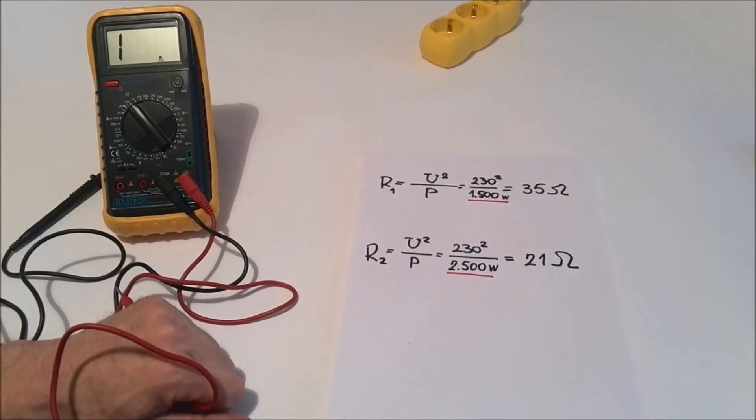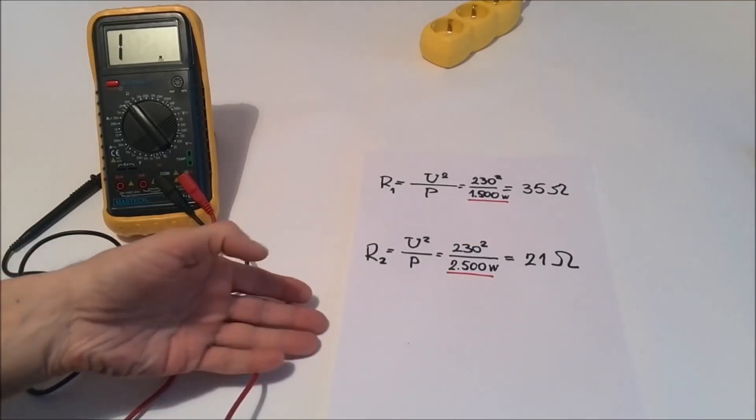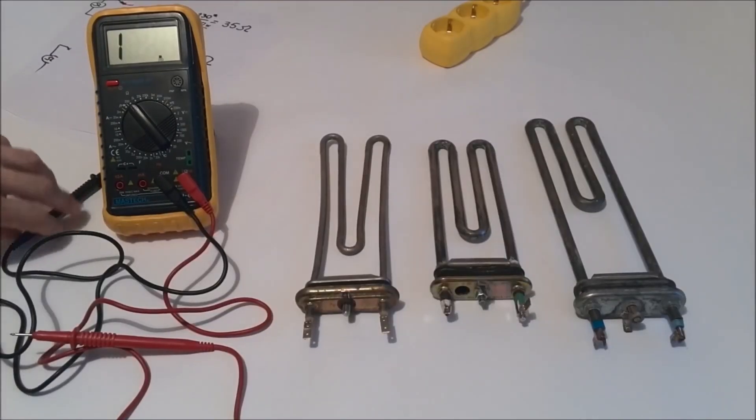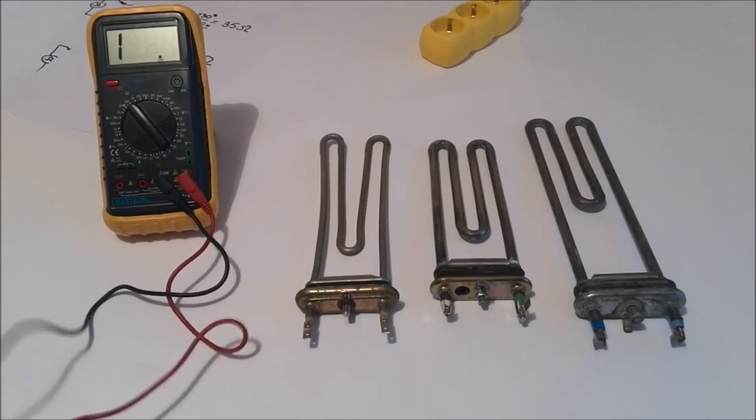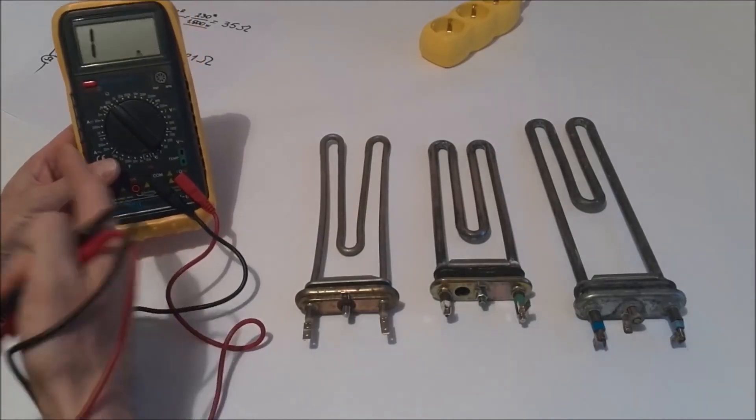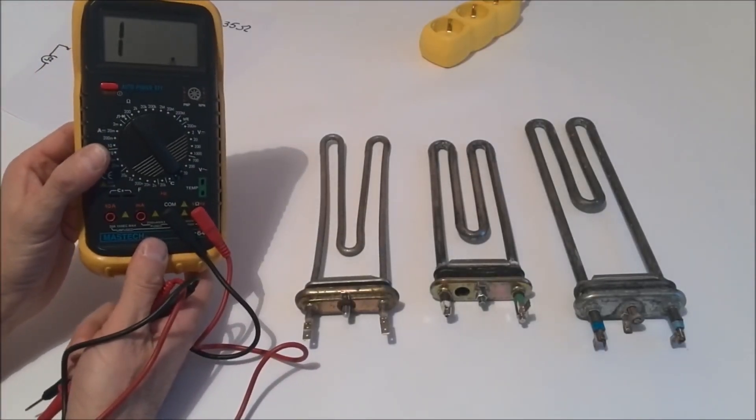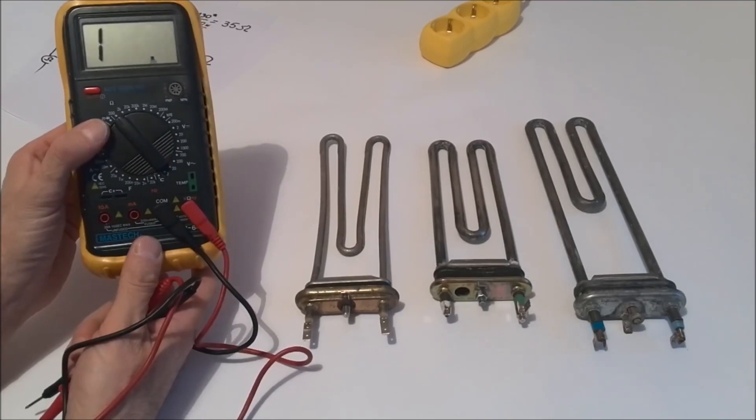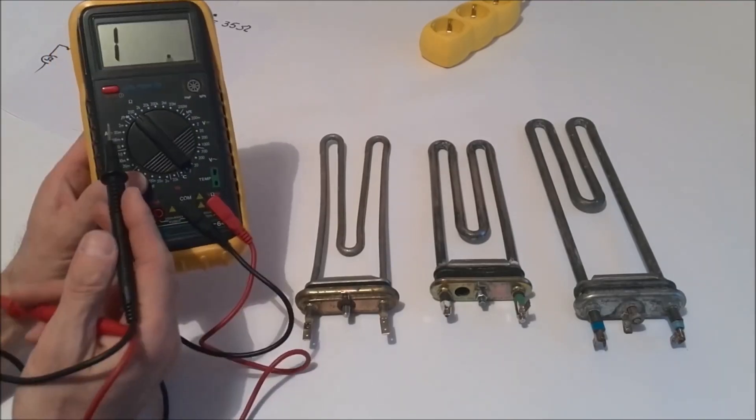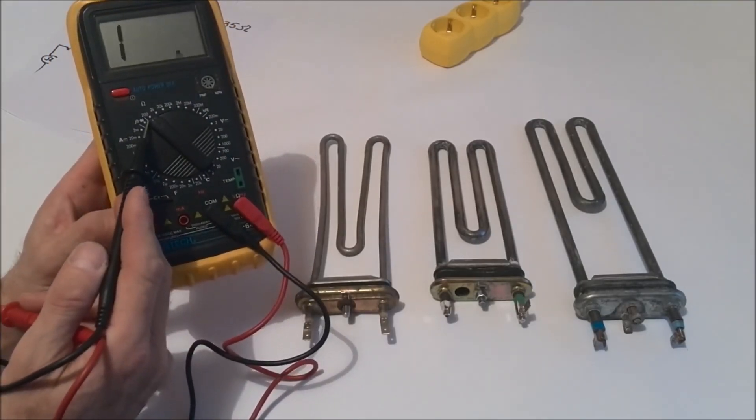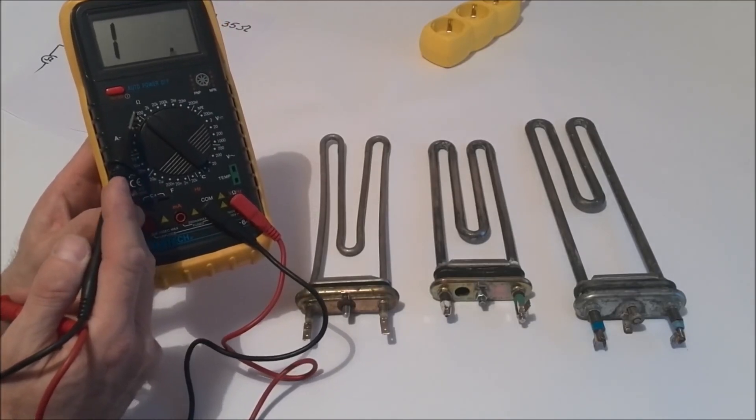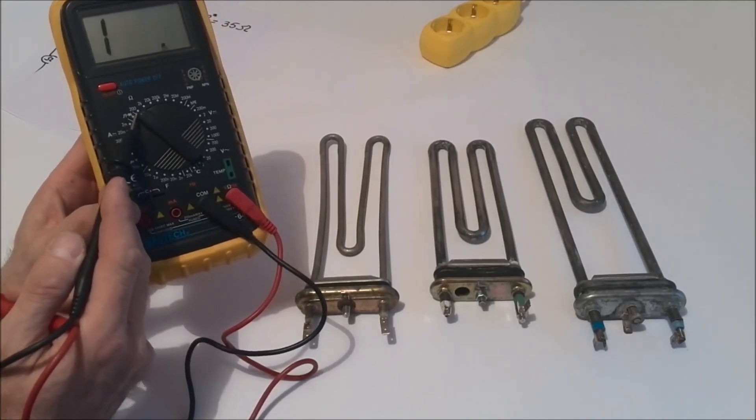We will now practically show how we test the functionality of the pipe heaters. Here we have three heaters whose functionality we need to determine. We have seen from this calculation that the resistance of the heaters is somewhere in the range of about 15 ohms to about 40 ohms. So we will take our multimeter and adjust to measure the resistance and a range of 200 ohms is enough for us.